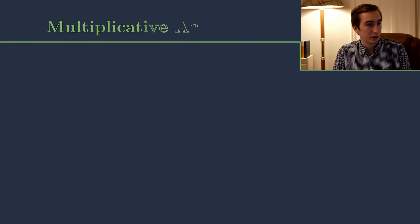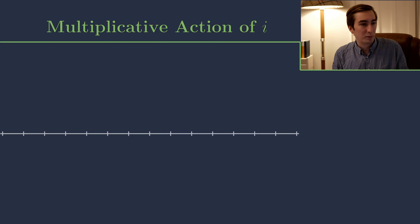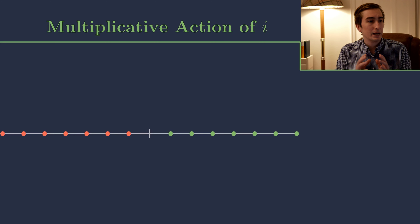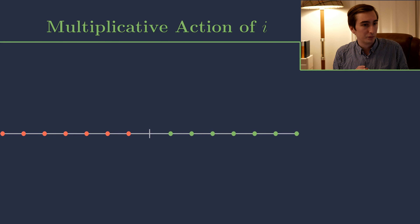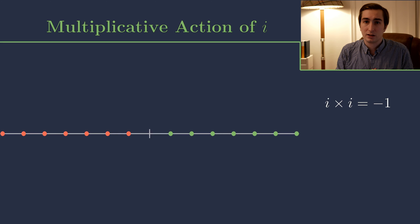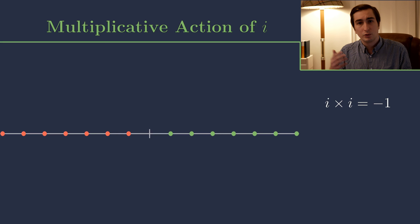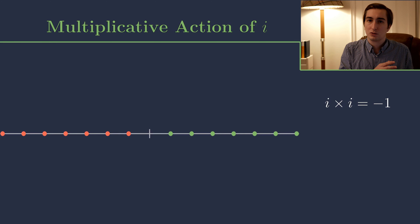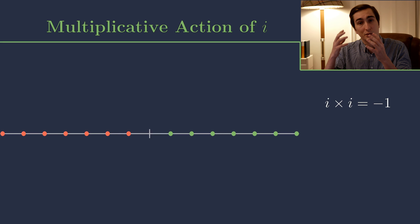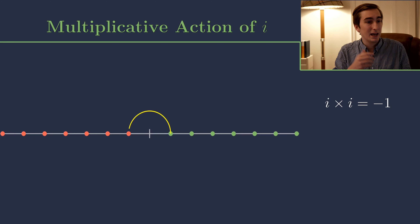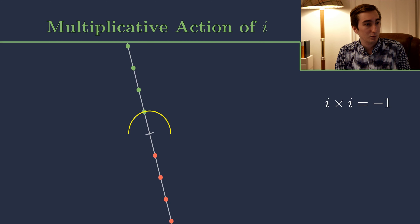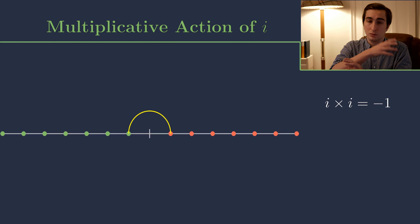Let's look at the first animation. I want to think about the multiplicative action of i. Here I've written down the number line — think of this as the real number line, with green dots for positive integers and red dots for negative integers. We've got i defined such that i times i equals minus 1. If we think of minus 1 in a multiplicative way, we saw what it did to the number line — it rotated the number line by 180 degrees.